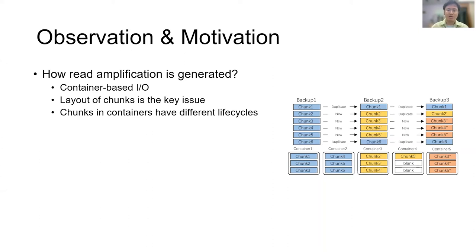The chunks in containers having different life cycle leads to read amplification. For example, like container 1, three chunks have different life cycle. When we restore backup 2 and read container 1 from disk, read amplification is caused because chunk 2 is not required in backup 2. However, when we restore backup 1, read container 1 will not cause any read amplification. It tells us we would better ensure chunks in containers have the same life cycle.